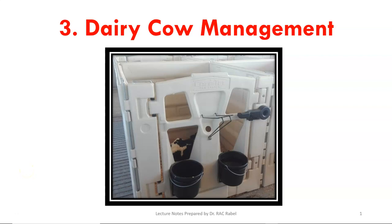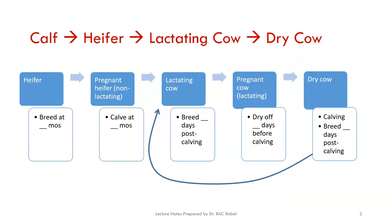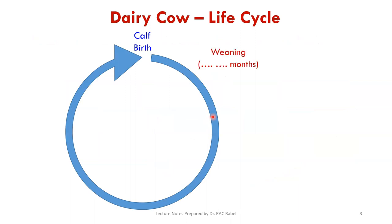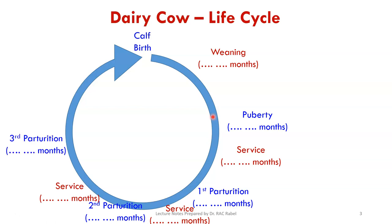We have covered calf management and heifer management during previous lectures, and today we start the management of the dairy cow. Dairy cow management is the third and last topic, so by now you should know when to wean, when to breed, when to calve, and the body weight ratios, age, and all related topics. We'll be covering the rest of these topics during the next few lectures, building on the lifecycle and major landmark events already discussed.